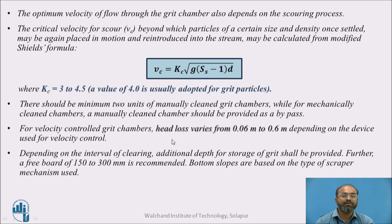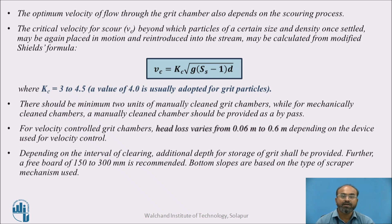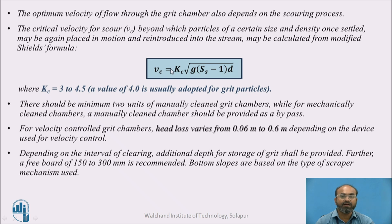To get the optimum velocity of flow through the grit chamber, we must consider the scouring process and calculate the critical velocity of scour, Vc — the velocity beyond which settled particles of certain size or density would be resuspended and rejoin the stream. We calculate critical velocity using Shields formula: Vc = Kc × √(g × (Ss − 1) × d), where Kc is taken between 3 to 4.5, generally 4 for grit chamber design, and g is 981 (since diameter is in centimetres). There should be a minimum of two units of grit chambers — one manual and one mechanical — so that if one fails, the other remains operational.